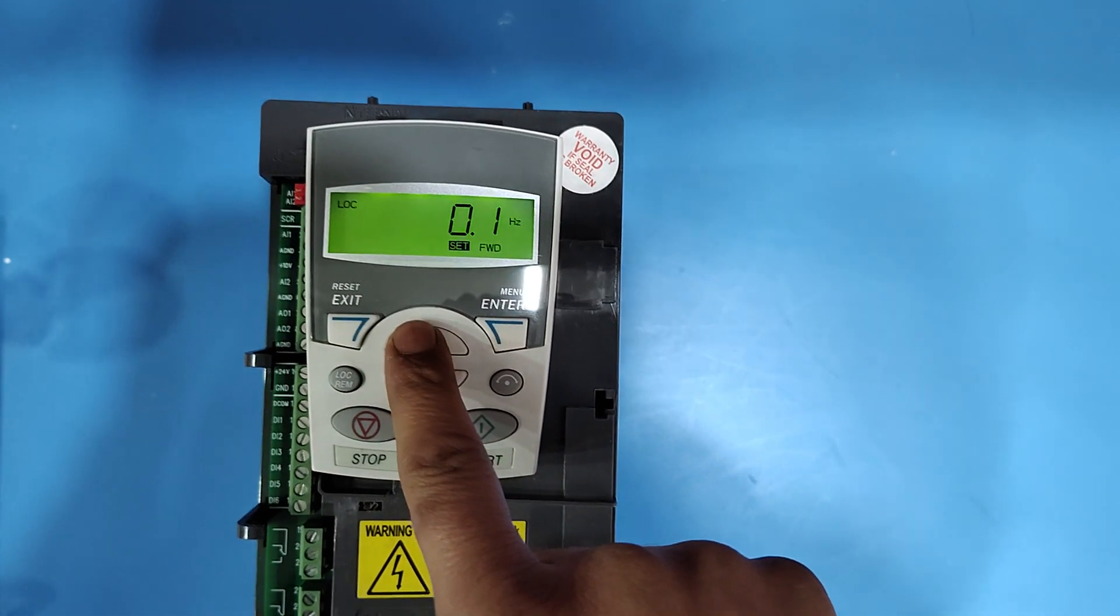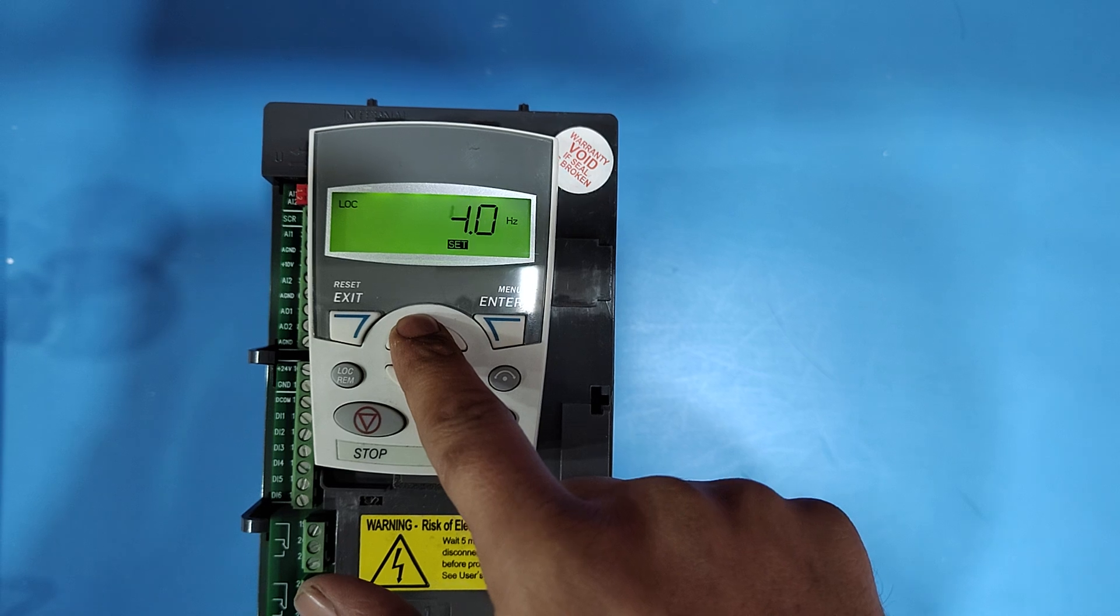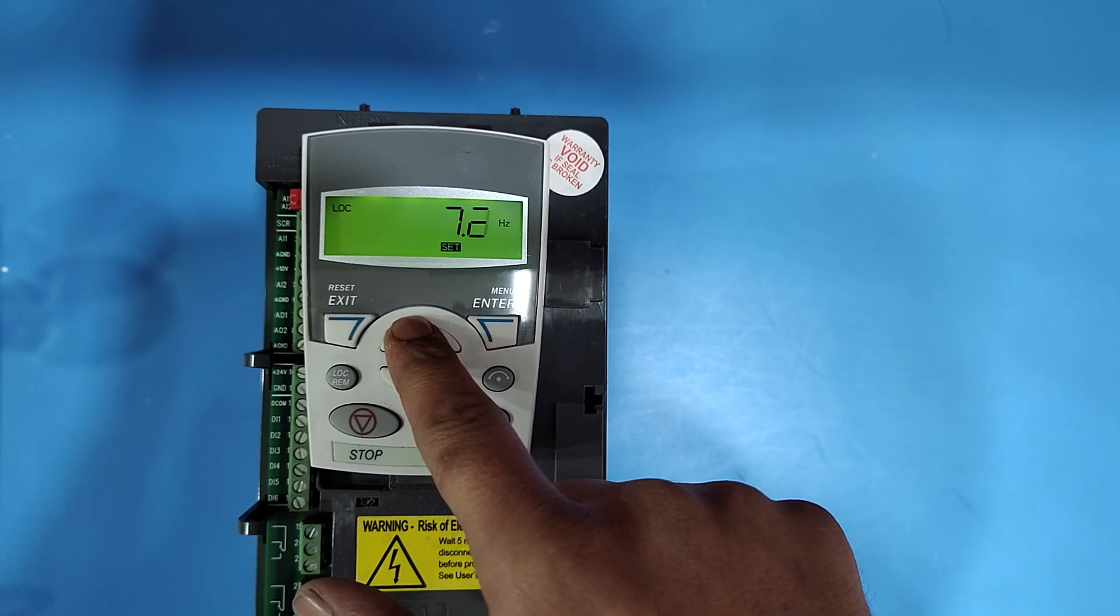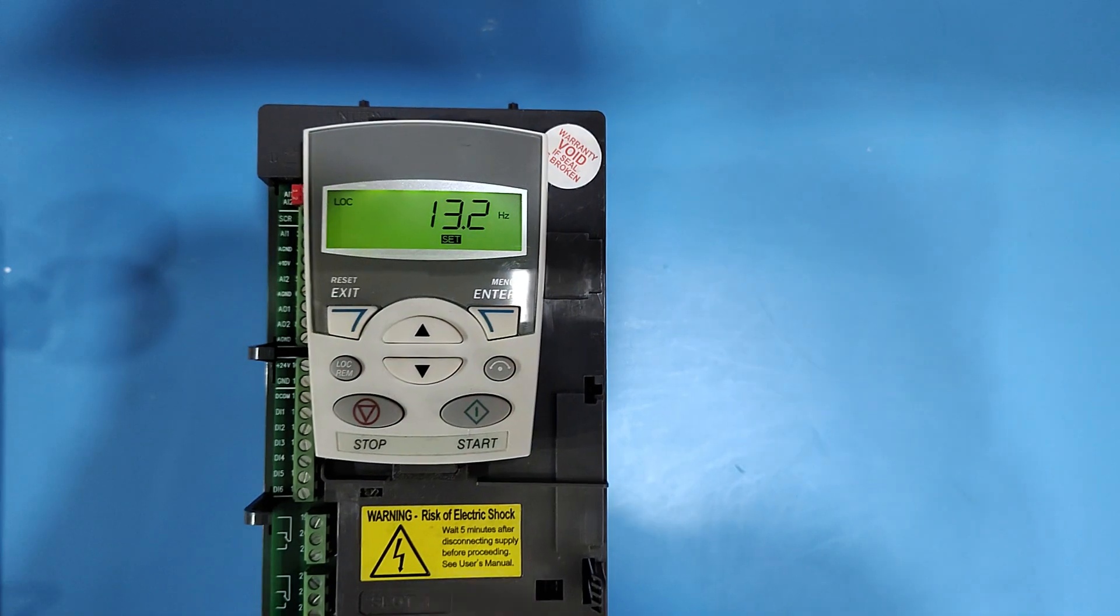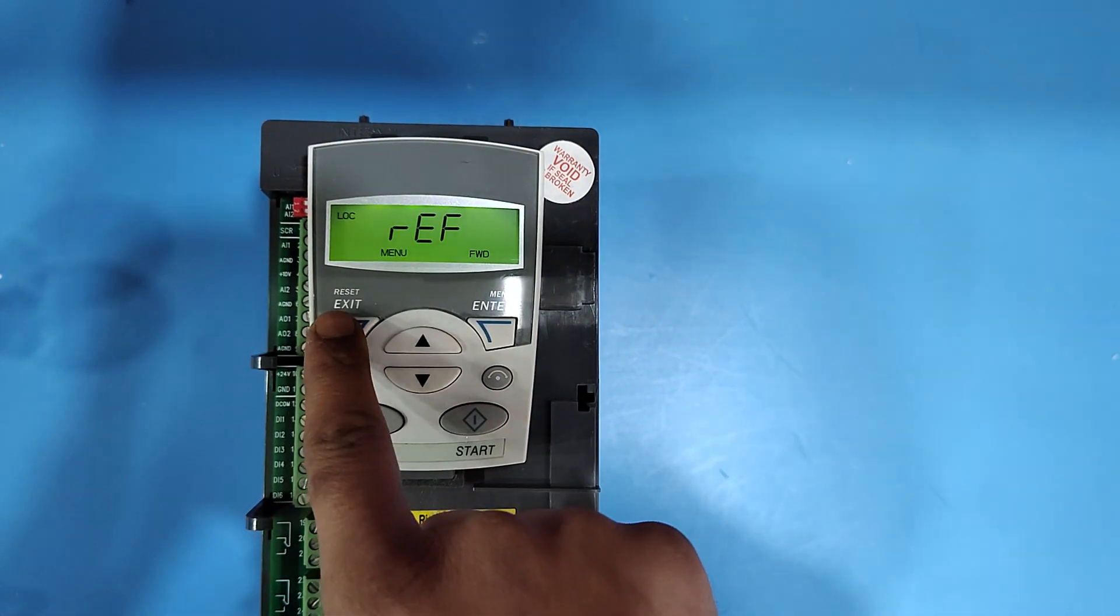For increase or decrease your reference, press UP key or DOWN key and set any speed. Then press ENTER button and then press EXIT button.